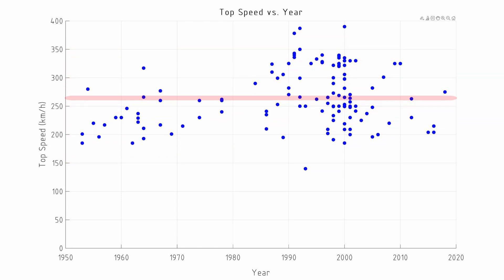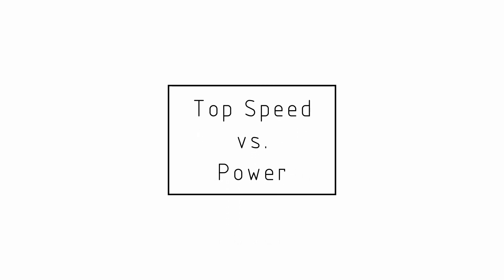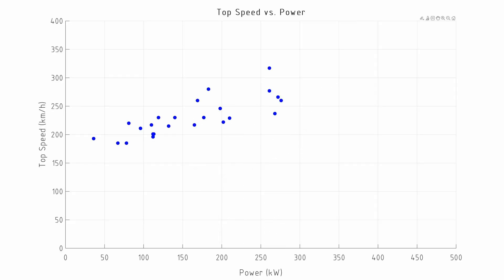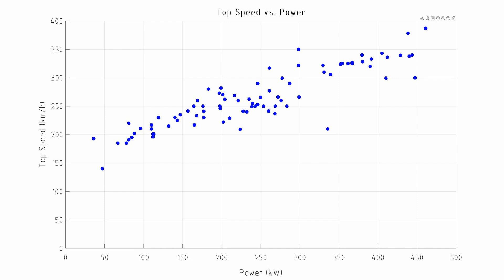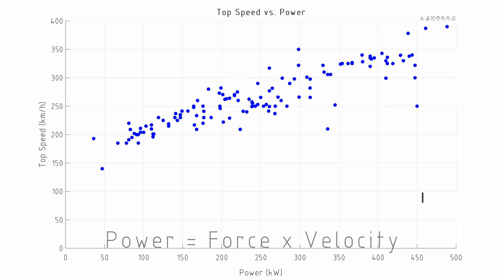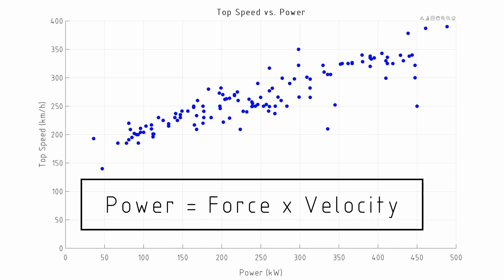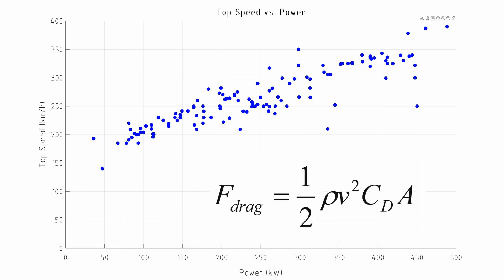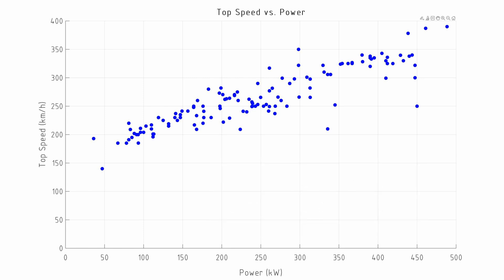The number one parameter that relates to top speed is power, and there's a very strong relationship here — as we increase power we increase top speed. The equation for power is equal to a force times a velocity, and the force in this case that's trying to slow the vehicle down will be the drag force, which is proportional to velocity squared. So we would expect that the top speed versus power will actually be related by a cube root.